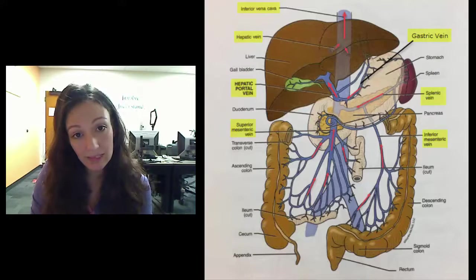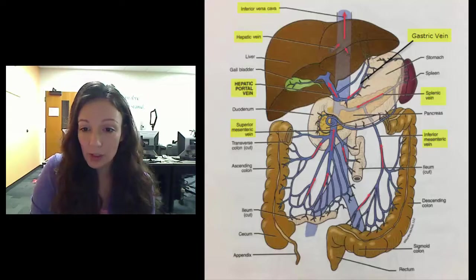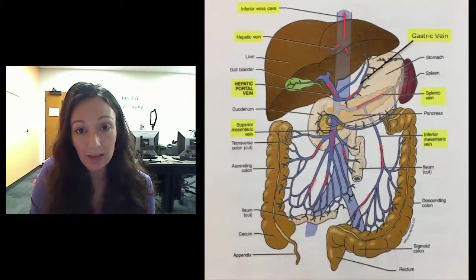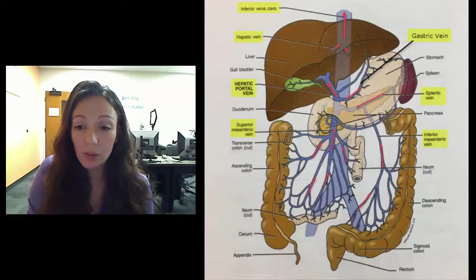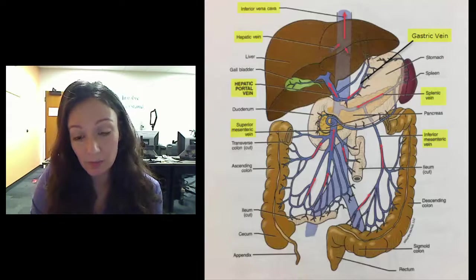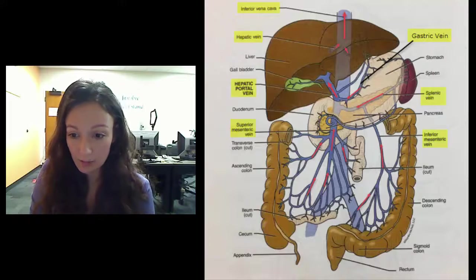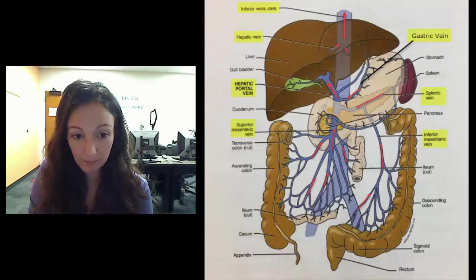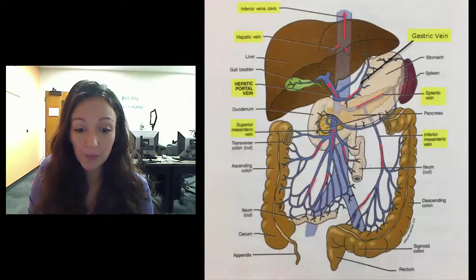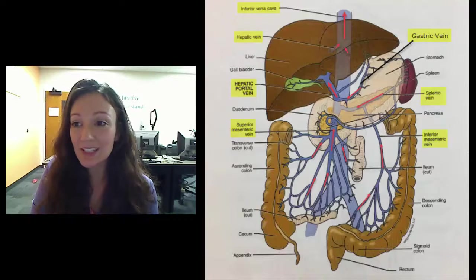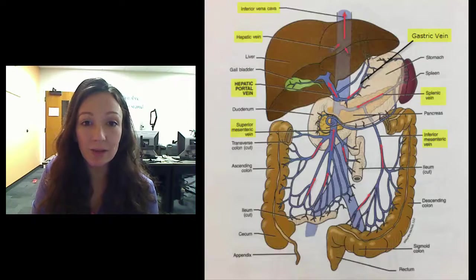So I hope this makes sense. Let me know if you guys have any questions. You can see the terms listed on the top of your paper that you need to know. But please, please, please make sure you memorize the gastric vein. I know it's not labeled on this diagram, so as far as I saw, anyways. So yeah. So that's it for this section, and I will see you guys for the next one.